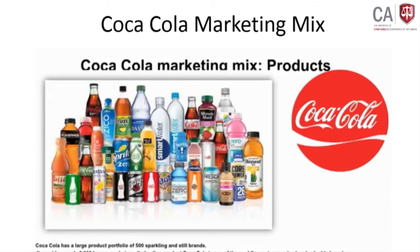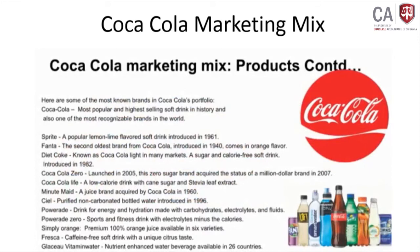Coca-Cola has a large product portfolio of 500 sparkling and still brands, providing nearly 3,900 beverage choices. There are 21 billion-dollar brands in its portfolio, of which 19 are available in low or no calorie choices. Key brands include Coca-Cola, Sprite (introduced 1961), Fanta (introduced 1940), Diet Coke (introduced 1982), Coca-Cola Zero (launched 2005), and Coca-Cola Life — a low calorie drink with cane sugar and stevia.